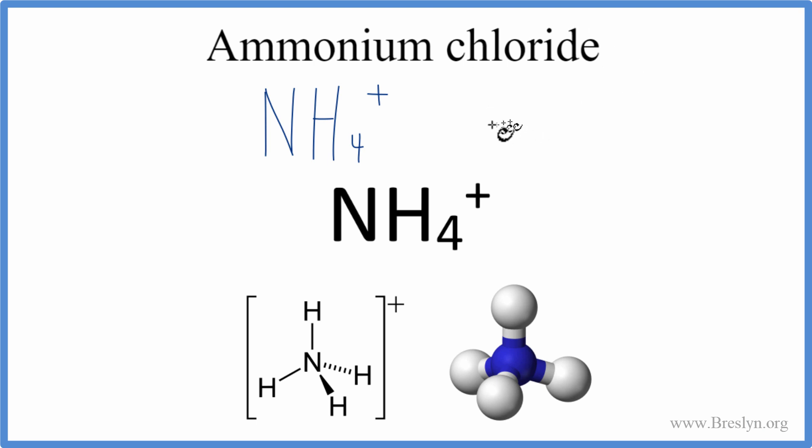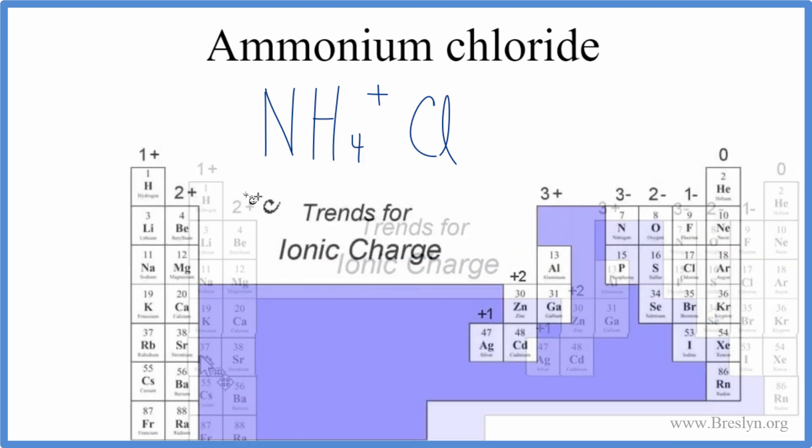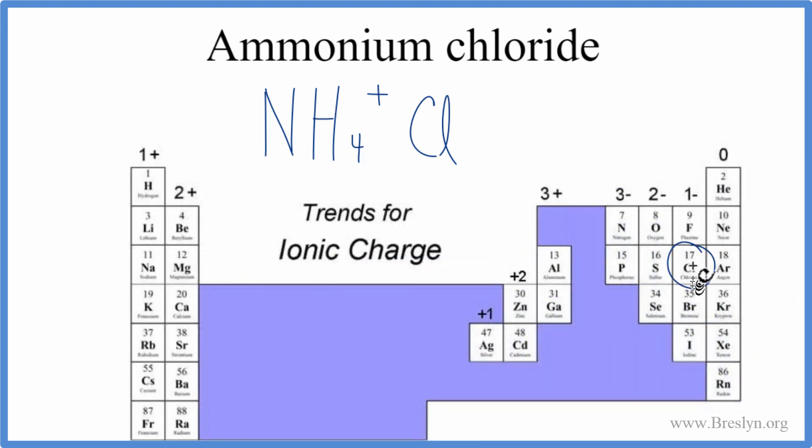Next, we can look at the chloride ion. That's chlorine. So we'll write Cl. And we need to look that up on the periodic table. It's a single element. So we find chlorine, which is right here. It's in group 17, sometimes called 7A, on the periodic table. And all of these have a 1- charge. So we're going to write minus up here.